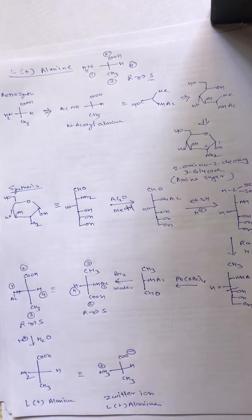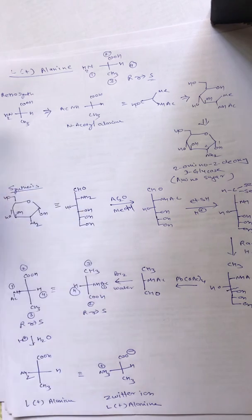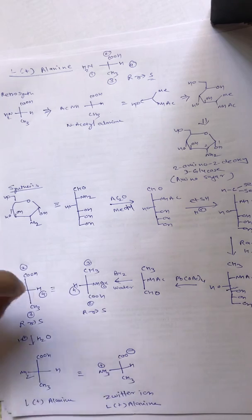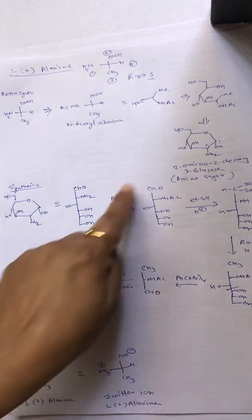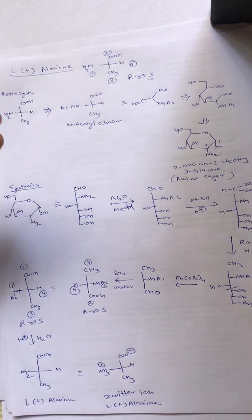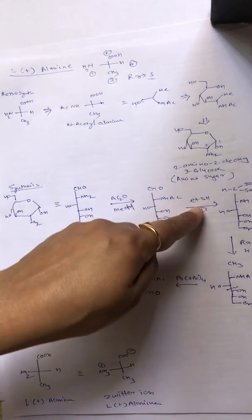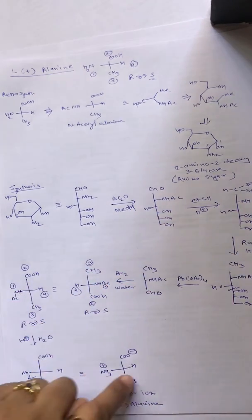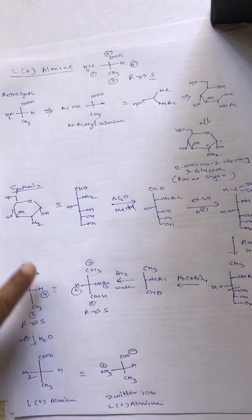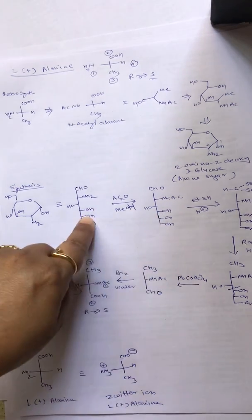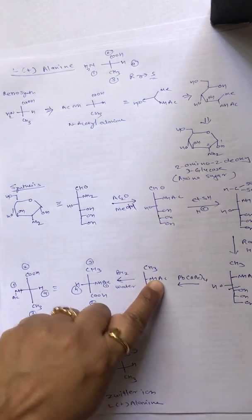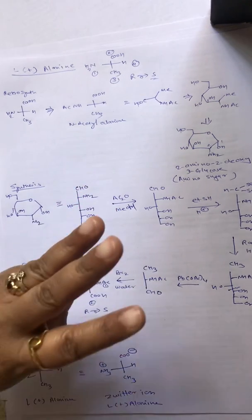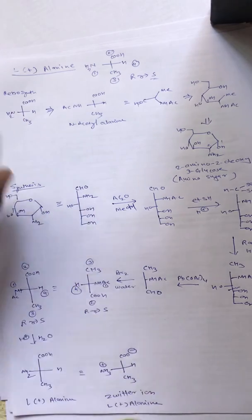This is the way they ask you—they give you the whole synthesis. As I said earlier, three types of questions will be asked. One is either they will ask retrosynthesis, or they will ask the complete synthesis, or sometimes they may pick up one, two, three, four steps from the synthesis, give you a starting compound and reagent and ask the product, or give the product and ask the reagent. These are the only three ways of asking questions in the Chiron approach. So that is it for L-alanine.